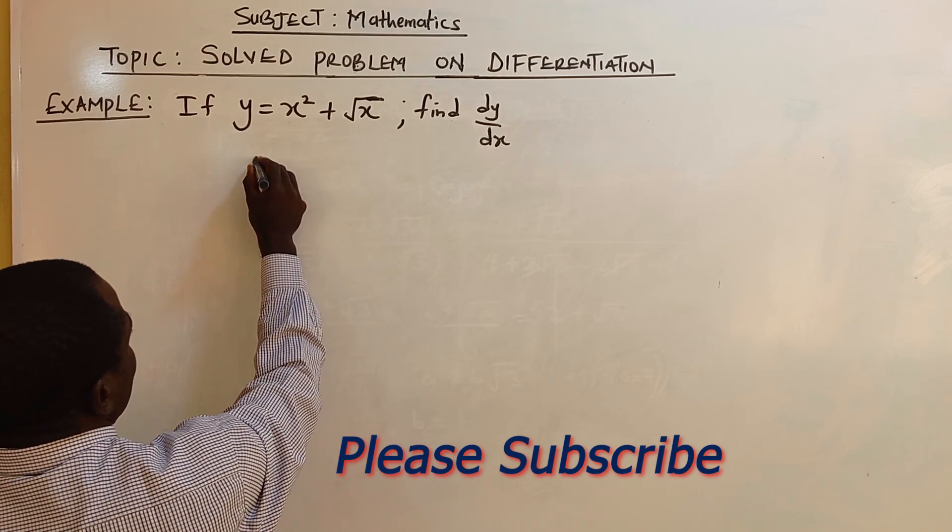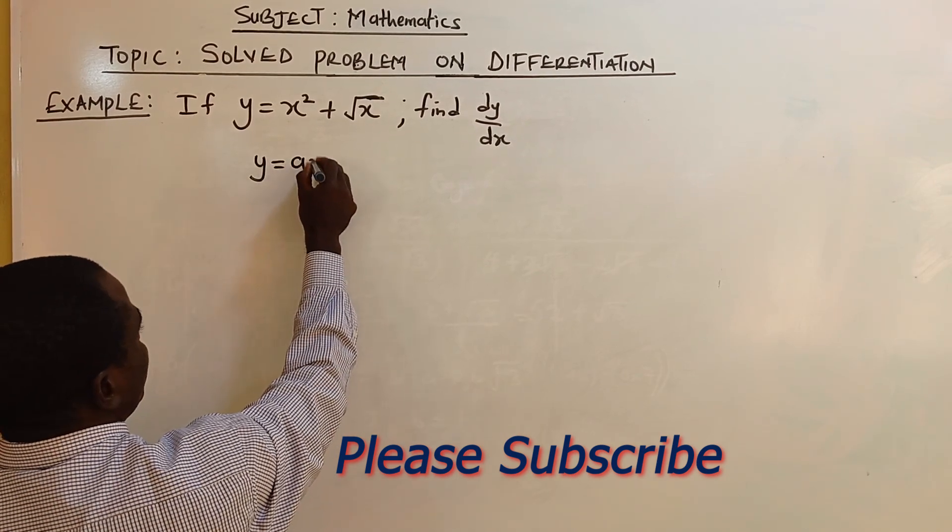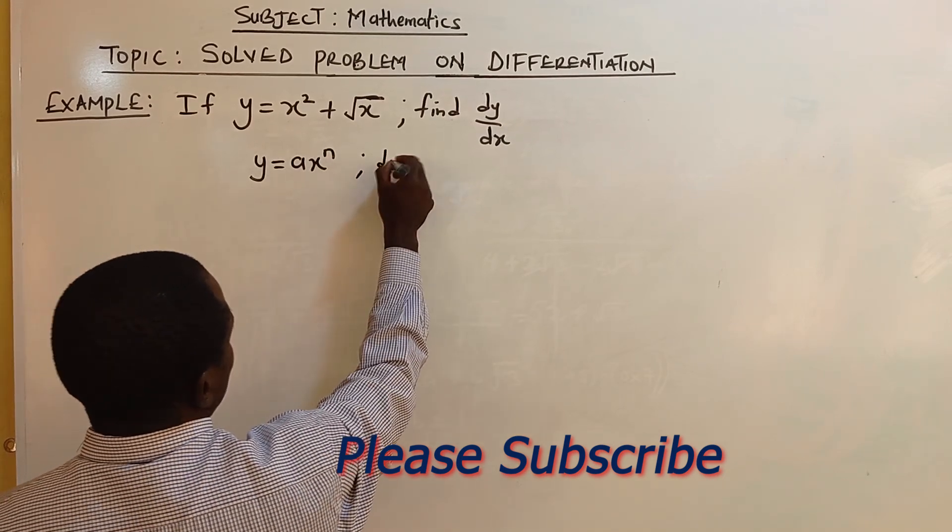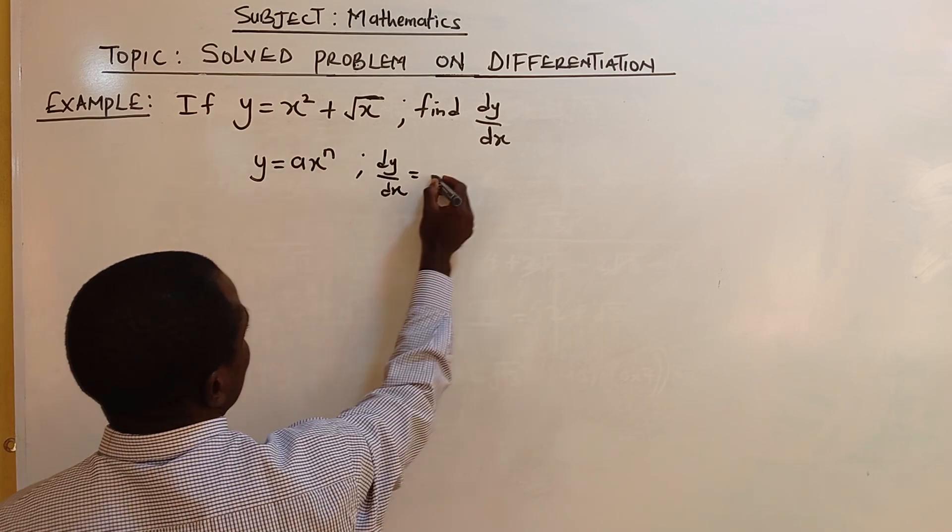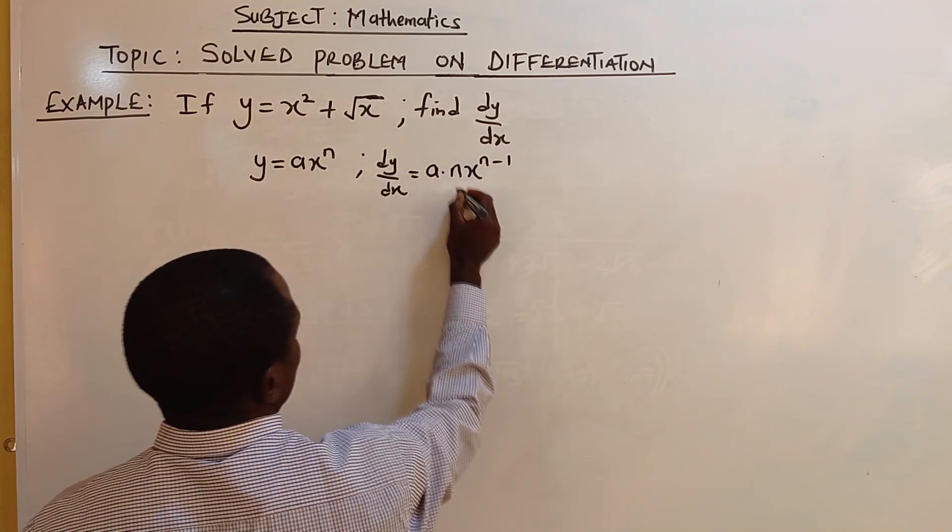Don't forget that in the general equation, we have a equal to x raised to the power n. Now we differentiate: dy/dx equals this n go to the front, a multiplied by n, x raised to the power n minus 1.